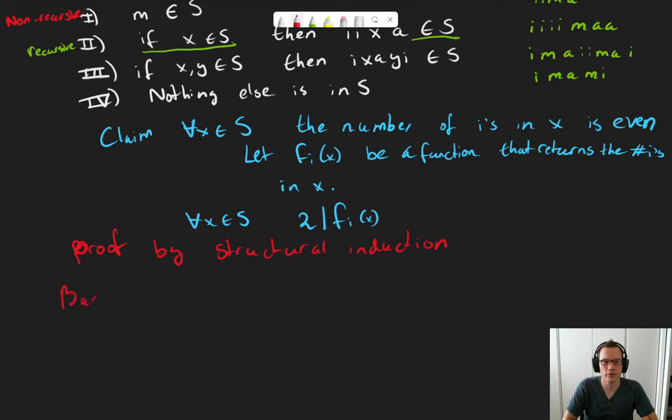So we're going to do a proof by structural induction. Let's start with the base case. And like I said, in the base case, we handle all the non-recursive rules. So in this case, there's just one thing we need to consider. The word M. Okay, so what about the word M? Well, for the word M, the number of i's in M is zero. Just the letter M. There's no i's in there. And zero, last time I checked, is two times zero. So two divides zero. Or two divides fi of M. So the base case holds.